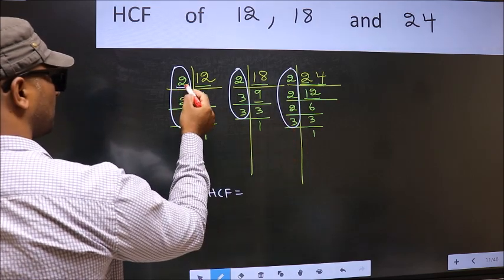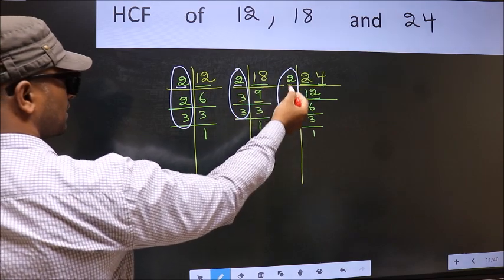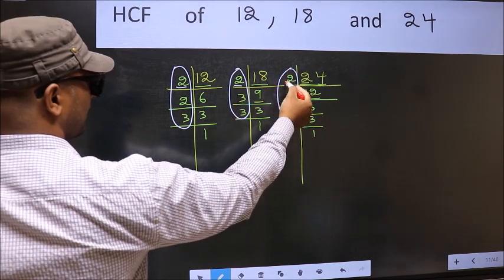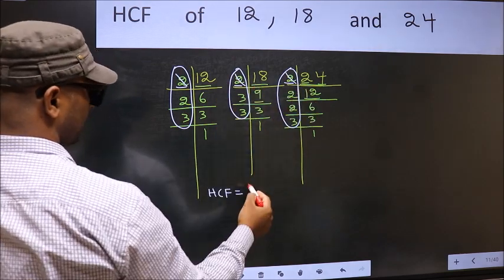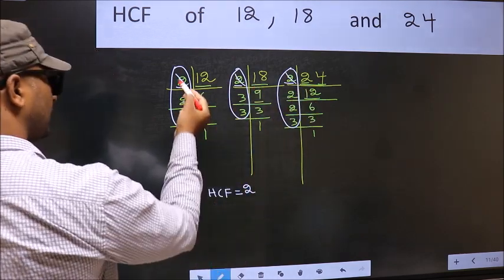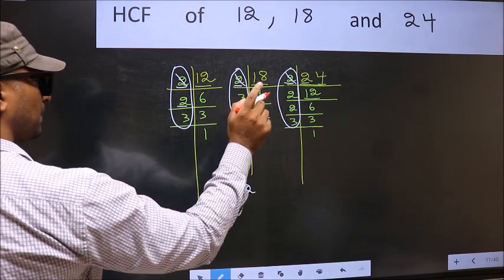Starting with the number 2. Do we have 2 here? Yes. Go next number 2. Do we have 2 here? No. So no need to check in the other place.